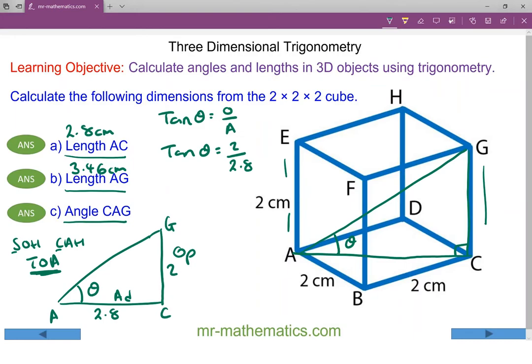Now to work out theta we're going to do the inverse of tan which is called arc tan, and we're doing this to both sides. So theta is arc tan of 2 divided by 2.8, and that comes out as about 51 degrees.